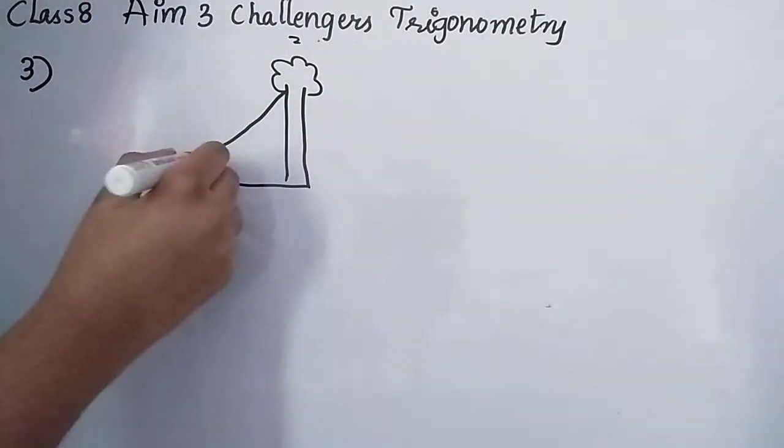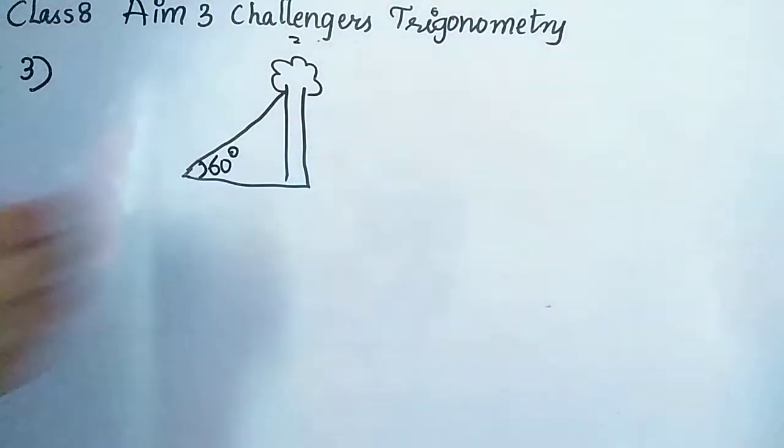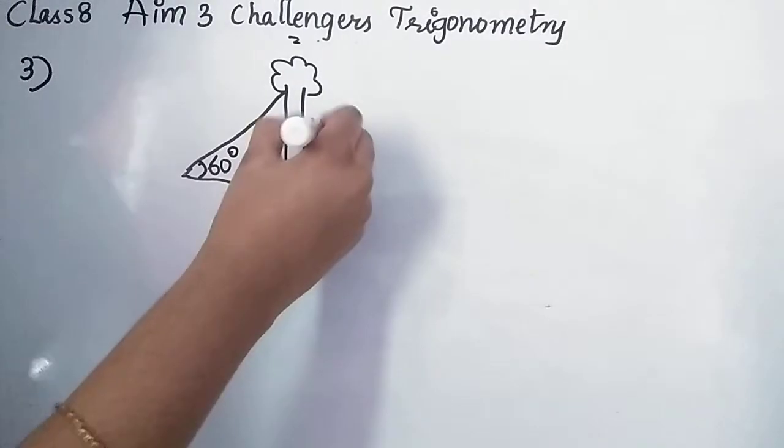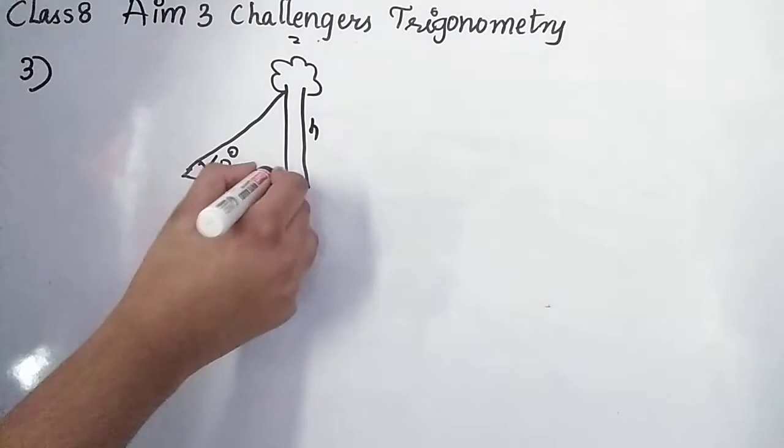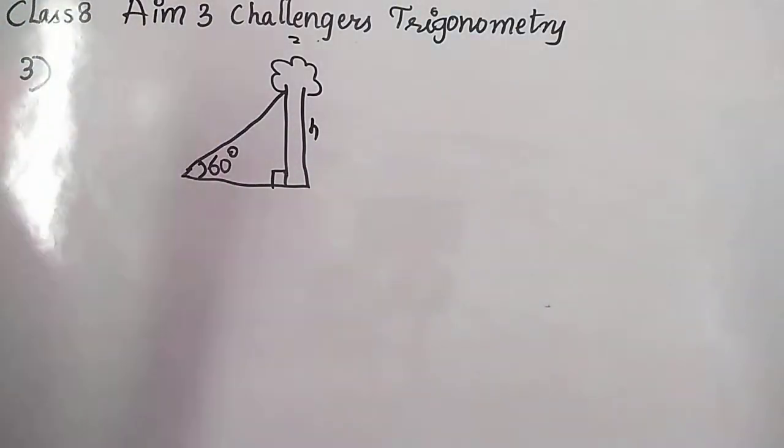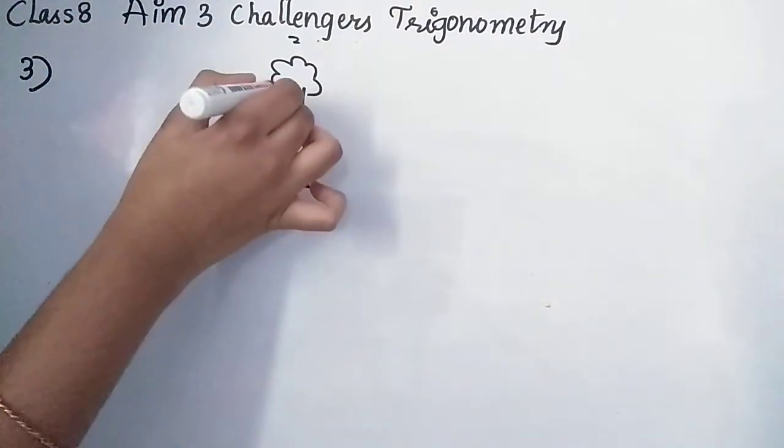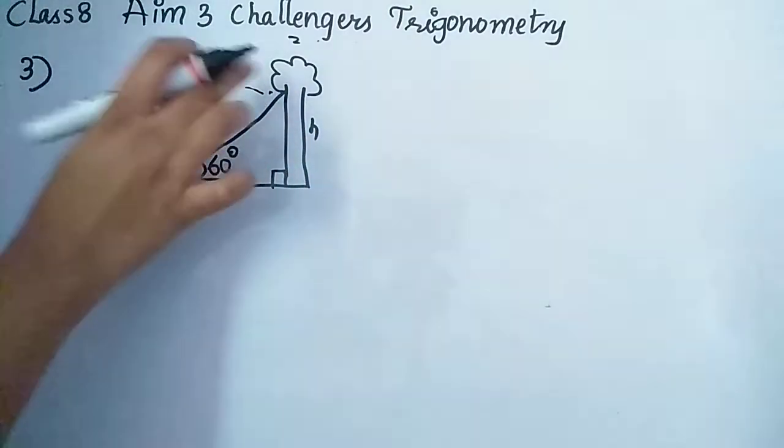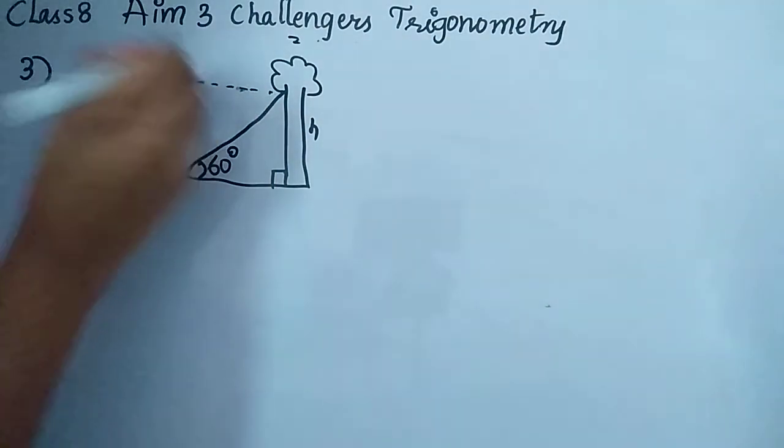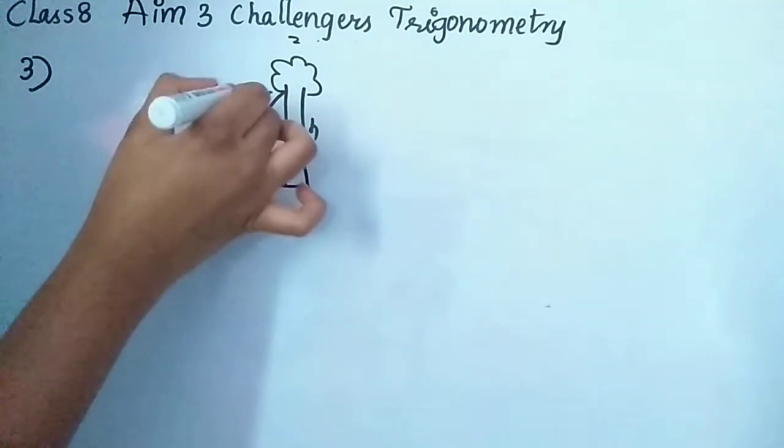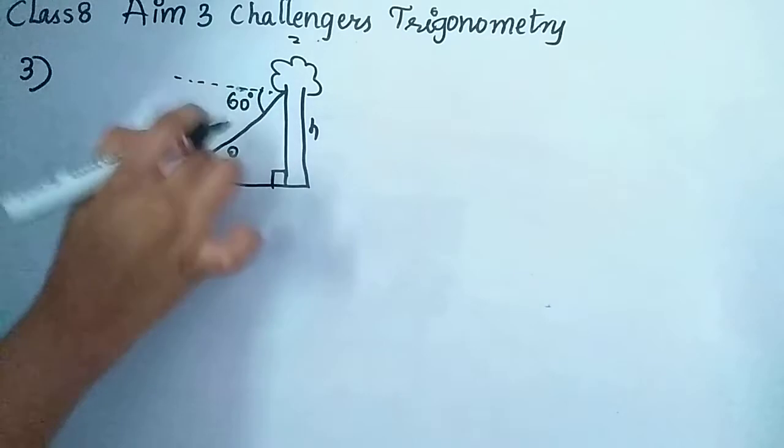This is a tree. Fine. So this is 60 degree they told. This height of the tree we have to find. And this is a right angle. And I think you all know this very much important rule that it will come here. Actually this is not angle of depression. Remember that. This is the angle of depression 60 degree. So these two are equal.